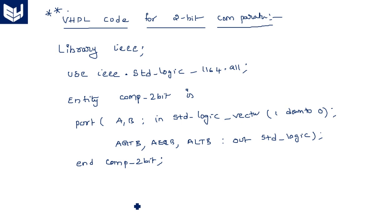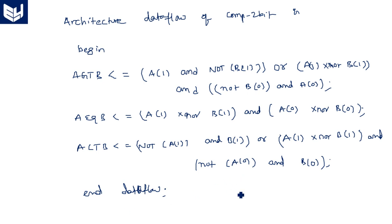This completes the VHDL code for the 2-bit comparator. We are simply taking the Boolean expressions from the K-map and writing them using gate-level keywords. In the next video, we will look at the 4-bit comparator. Thank you.